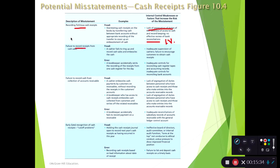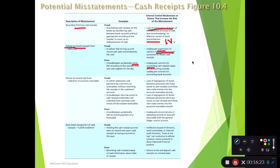Failure to record receipts from cash sales is another misstatement. The fraud version is intentionally not recording cash receipts and taking the cash yourself. An error would be a bookkeeper or clerk omitting the recording of cash receipts. Control weaknesses include not having good supervision of a cashier and not having notices for customers about expecting a receipt. On the error side, not having good detection controls on the back end also contributes.